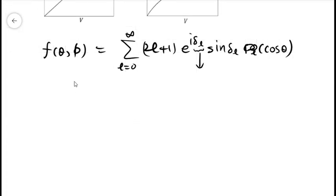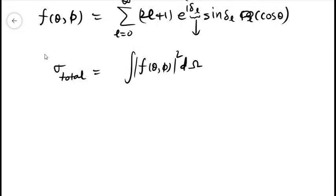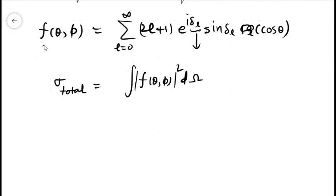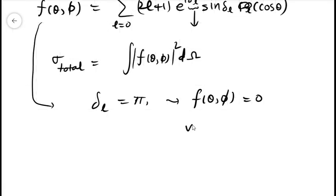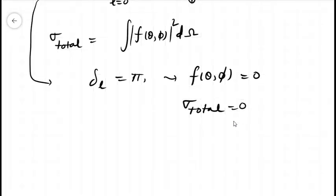And the total scattering cross section is given by the integral of |f(θ,φ)|² dΩ, where omega is the solid angle. So from the expression of the scattering amplitude it is clear that if δ_l equals 0 or some integral multiple of π, then we will get f(θ,φ) equals 0, and if f(θ,φ) is equal to 0 then σ_total will be equal to 0 and the scattering cross section is 0, that means no scattering.